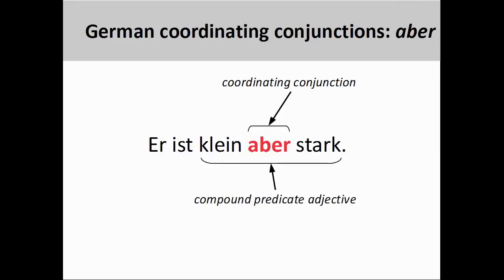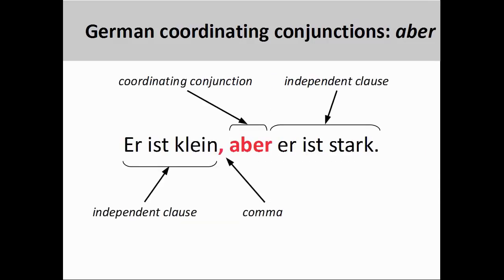The coordinating conjunction aber, meaning BUT or HOWEVER, is used to express a contrast or an exception. As you see on the screen, the conjunction can be used to merge two apparently contradictory adjectives — klein (small) and stark (strong) — to express the idea that the subject, despite his small stature, possesses a remarkable physical strength. This creates a compound predicate adjective. Of course, the same idea could also be expressed in a longer sentence using two independent clauses: 'Er ist klein, aber er ist stark' (He is small, but he is strong).